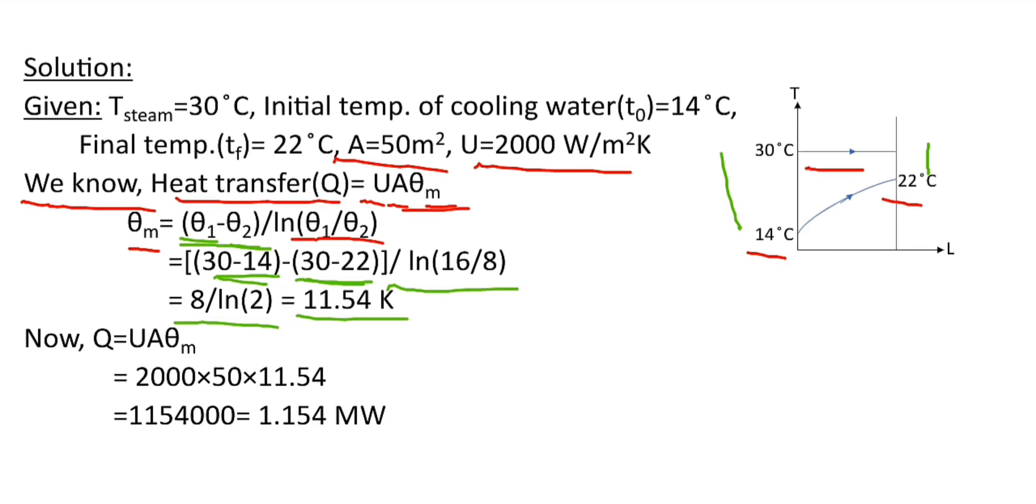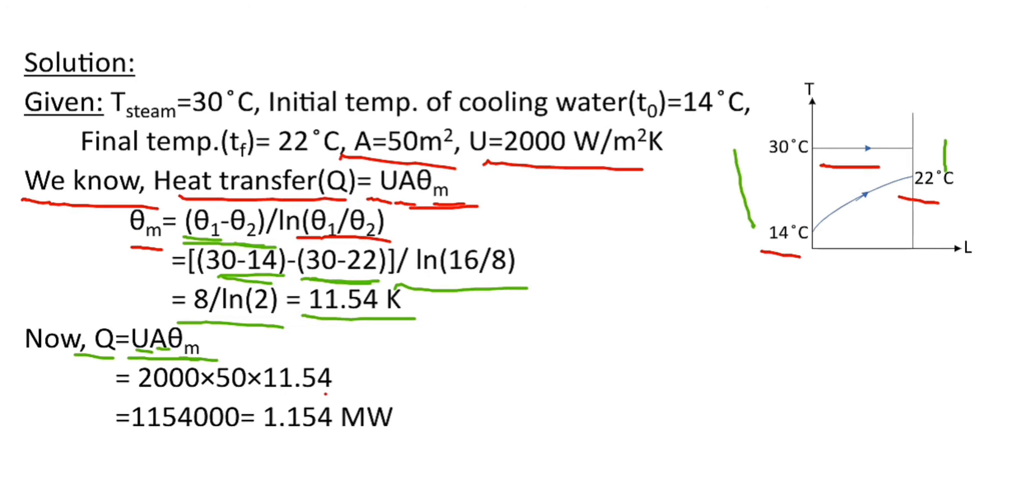Now heat transfer, that is Q, is equal to U times A times theta_m. And here the value of U, A, and theta_m is known. So it becomes 2000 into 50 into 11.54. So from here we are getting the value of Q, and it in megawatt is equal to 1.154.